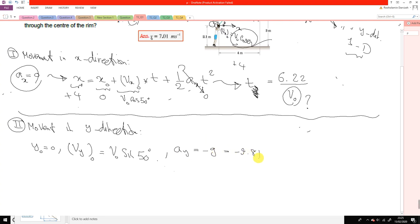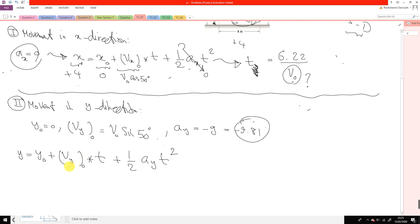Again this is a constant acceleration, because this is the only acceleration we have and it's a constant value. And I can write the final position: y equals initial plus Vy times time, plus one-half Ay times t squared. Okay, this is zero.